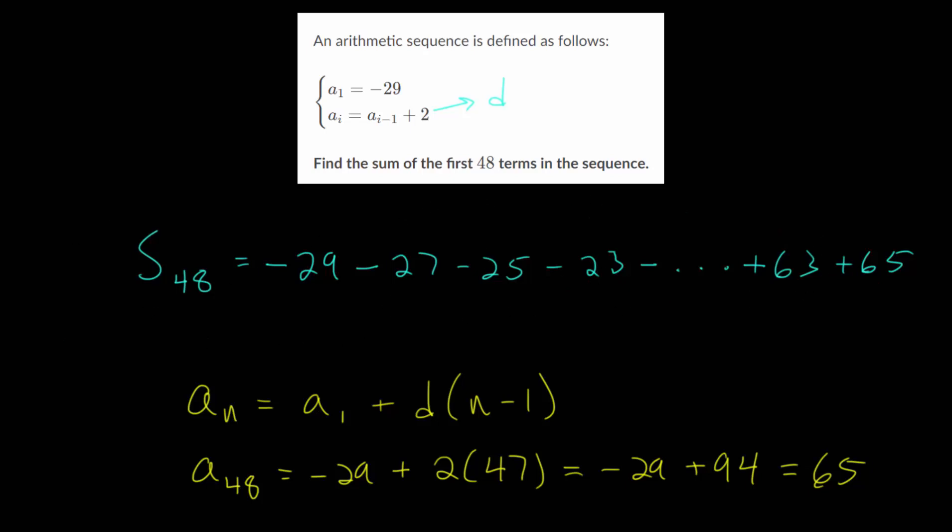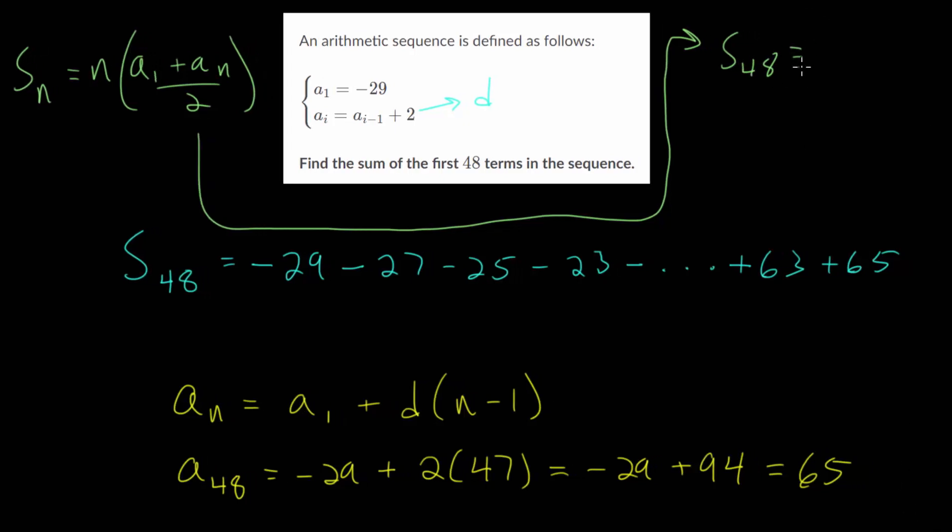So this is our sum. And let's use our formula again. S sub n is the number of terms multiplied by the first term plus the last term, all divided by 2. And plugging in our numbers into this formula, S sub 48, we know there are 48 terms, and we know the first one is minus 29. The last one is 65. We'll divide all of that by 2, and we'll need a calculator for this. And our final sum of these first 48 terms is going to be 864. So that'll be our final answer.